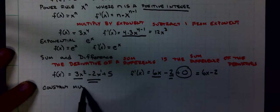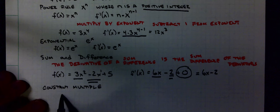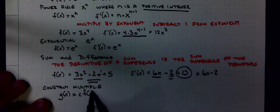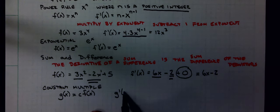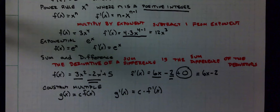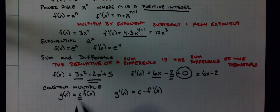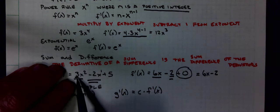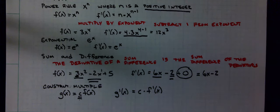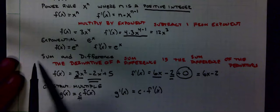I showed you a constant multiple rule. If g of x equals some constant c times f of x, then g prime of x is equal to that constant times f prime of x. Basically, this constant is like the 3 I had right here. I took the derivative and multiplied it by 3. These last two rules, I think, are intuitive.